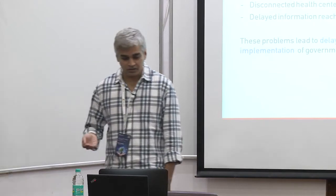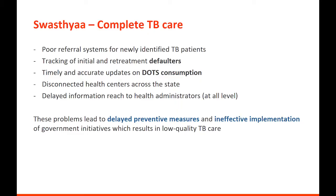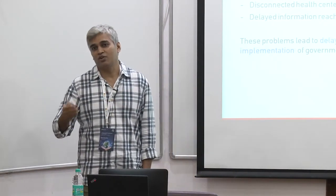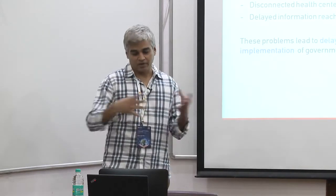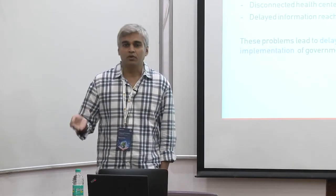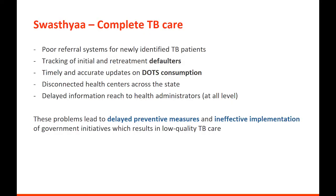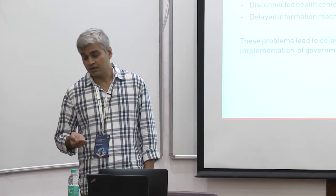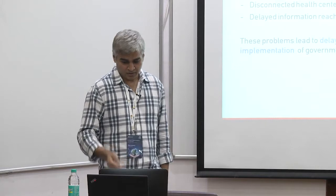How do we track these initial and re-treatment defaulters? Third is DOTS consumption — how do we real-time track DOTS consumption? 99 DOTS has been doing amazing work on that. Another major issue is that all health centers, both public and private, are completely disconnected. Specifically in Assam, where most of the population migrates from one place to another for work, if health centers are not connected, patients often don't enroll because they are daily wage workers. These problems lead to delayed preventive measures — by the time health administrators know a patient is not consuming medicines, it's too late and government schemes become ineffective.